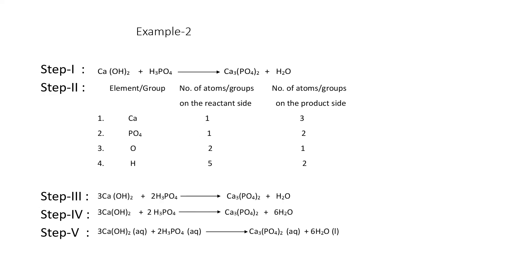Let us take another example involving a group of atoms. Calcium hydroxide reacts with phosphoric acid to form calcium phosphate plus water. Here we deal with elements as well as groups — we take calcium as an element, phosphate as a group (not as separate phosphorus and oxygen), then oxygen, and then hydrogen. On the reactant side: calcium = 1, phosphate = 1, oxygen = 2, hydrogen = 5. On the product side: calcium = 3, phosphate = 2, oxygen = 1, hydrogen = 2.